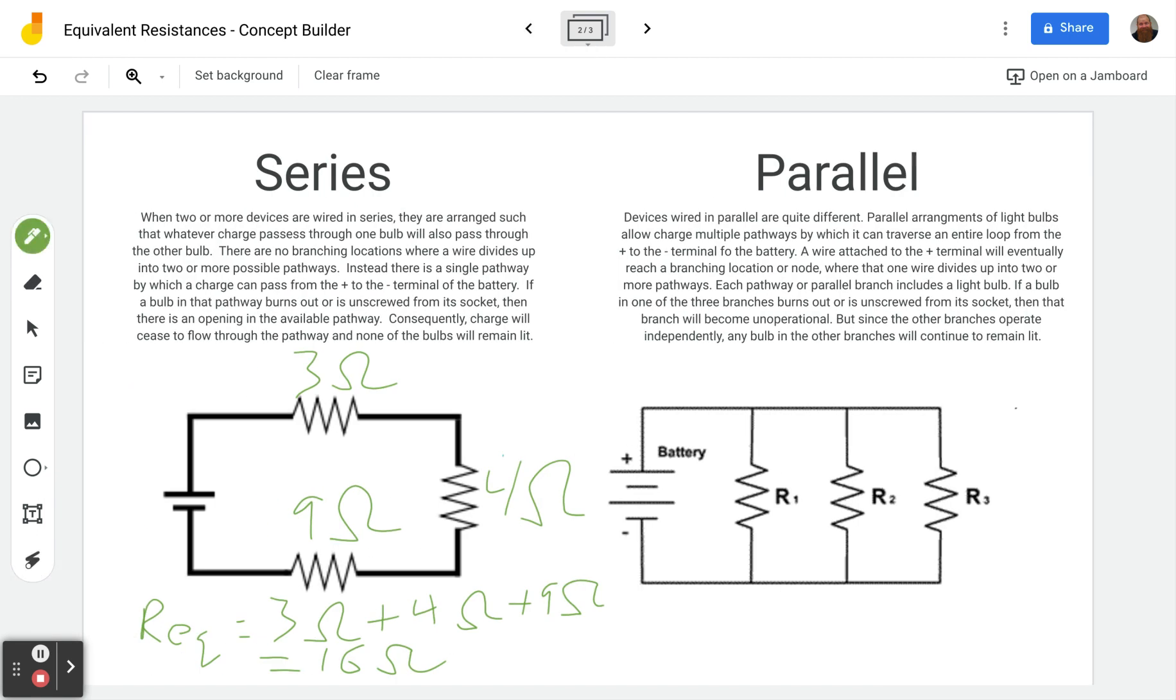So if we come over here and we have a 3 ohm and a 4 ohm and a 9 ohm, you won't have one this complicated in the concept builder. But you do see these on certain types of multiple choice tests especially. Or if you're in a more advanced physics class, you might just calculate it using the formula I'm about to show you. But I want to talk about the concept here first.